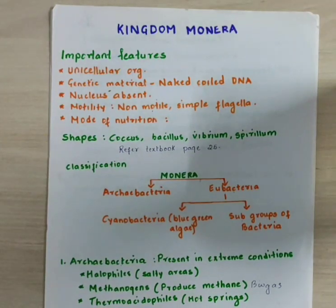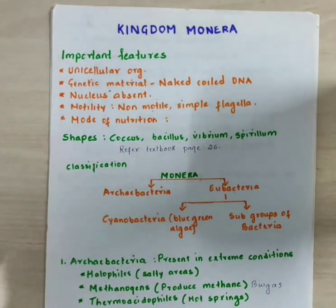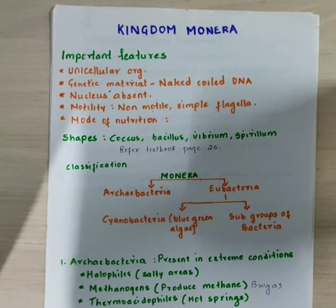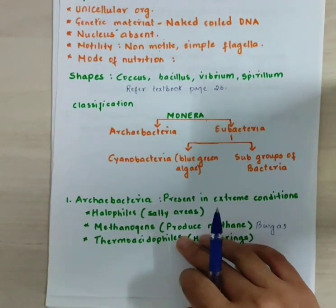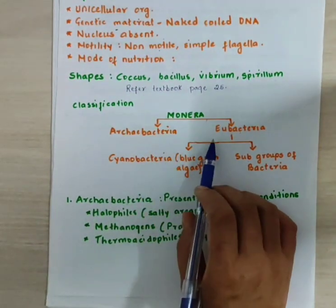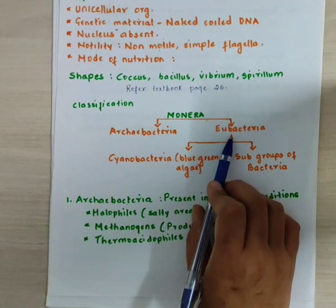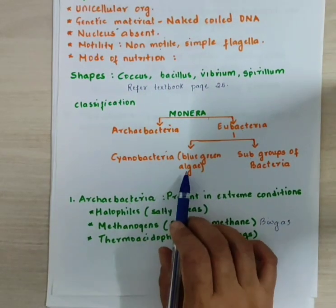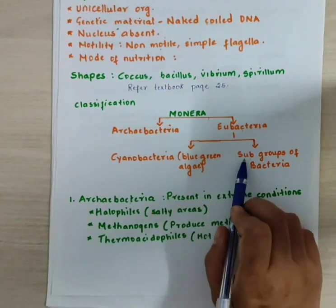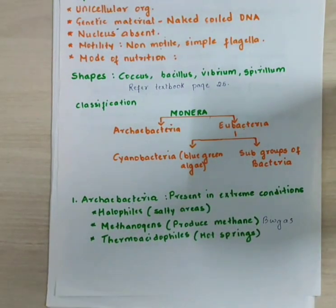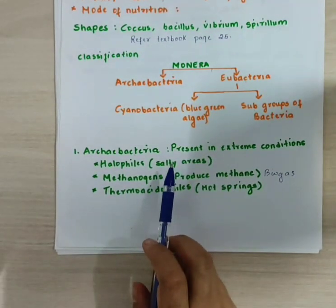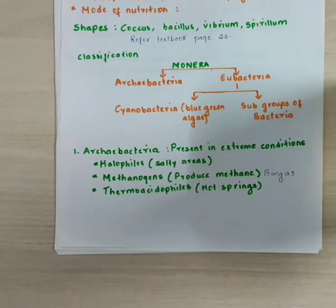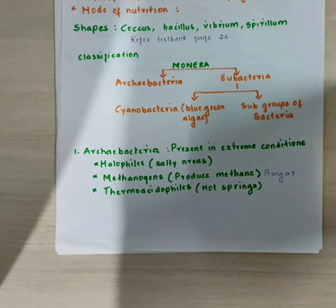If you do not have your textbook, you can look at the PDF posted in the last class. Under Kingdom Monera, we have Archibacteria and Eubacteria. Eubacteria is classified into cyanobacteria, also known as blue-green algae, and several subgroups of bacteria. Archibacteria are considered the oldest or ancient bacteria.